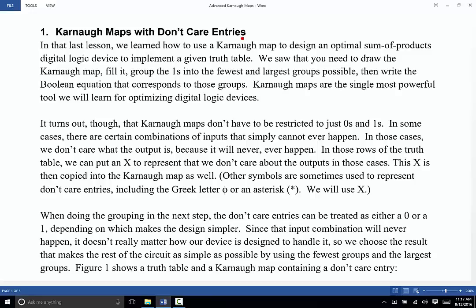There are certain combinations of events that will simply never happen. And it turns out that if you know that an event can never happen, then you can substantially simplify your work by putting that as a don't care entry.